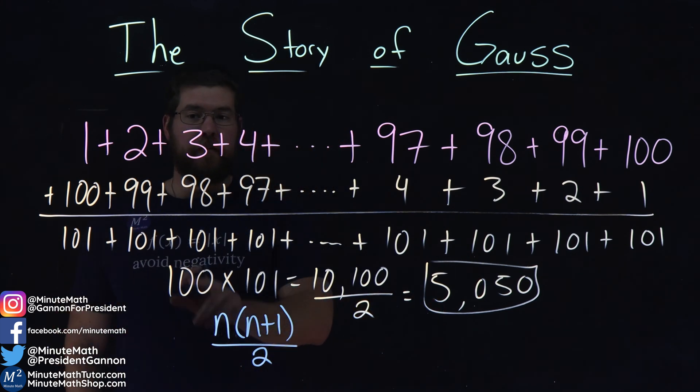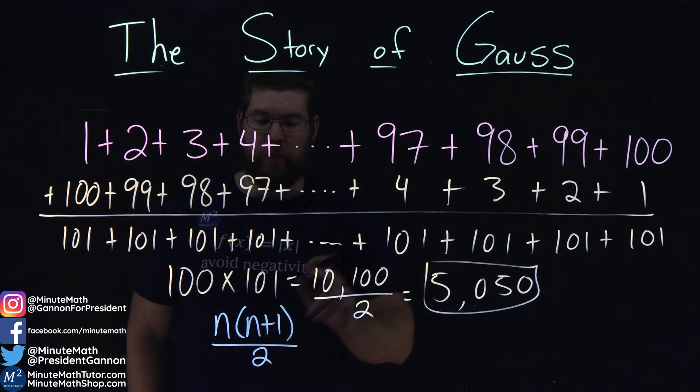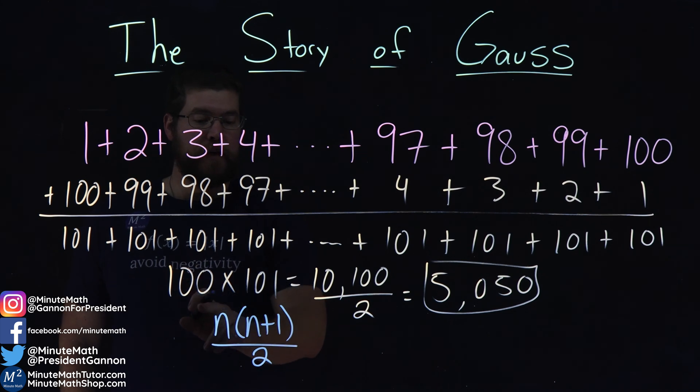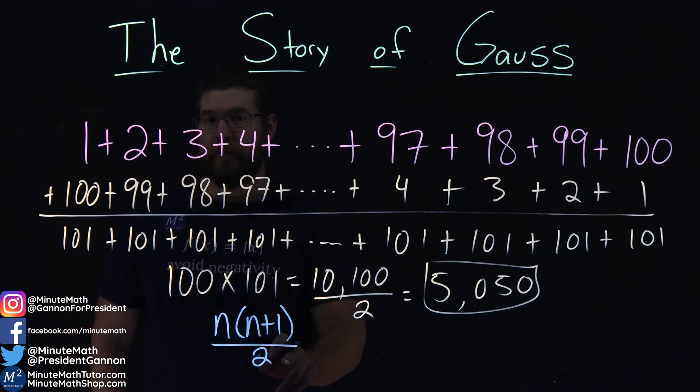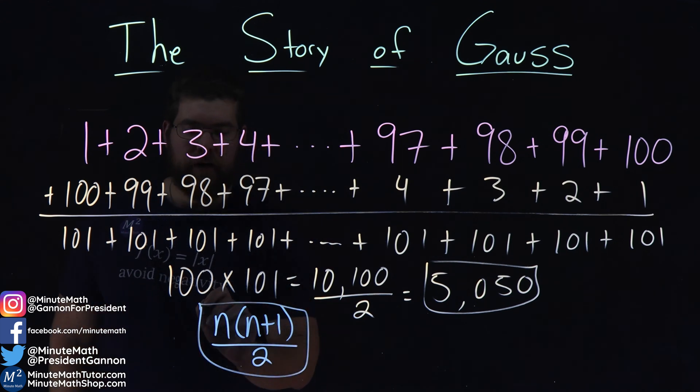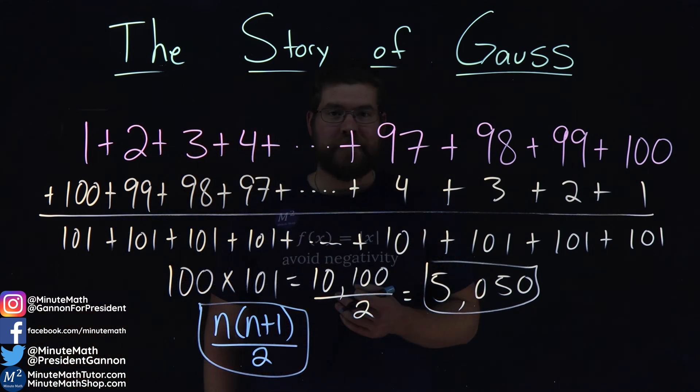We have n, say if we want to add the numbers from 1 to 100, that would be our n value here, 100, times 100 plus 1, 101, divided by 2. And this sum of series here is used a lot in mathematics if you get there.